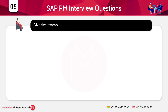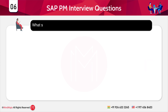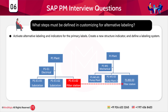The next question: give five examples of functional location structures. The five examples are: chemical process, energy or power station, property management, transport, steelworks production line, and so on. Next: what steps must be defined in customizing for alternative labeling? The steps are: activate alternative labeling, add indicators for the primary labels, create a new structure indicator, and define the labeling system.